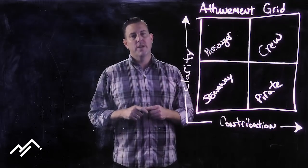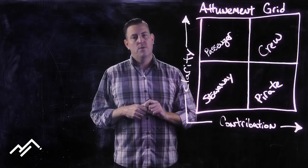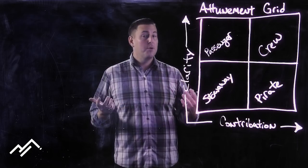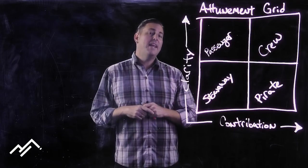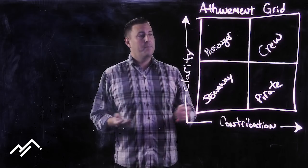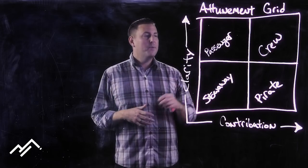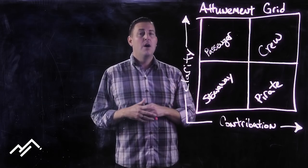I want to share with you the attunement grid. You can find this little tool in Church Unique, which is a book by Will Mancini. In it, he uses the analogy of a ship. If your church is that ship, he would say there's four types of people on board.